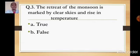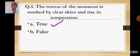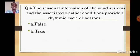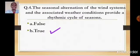Next question: The retreat of the monsoon is marked by clear skies and rising temperature. This is a correct statement — Option A is True.